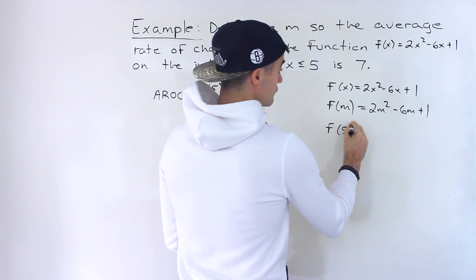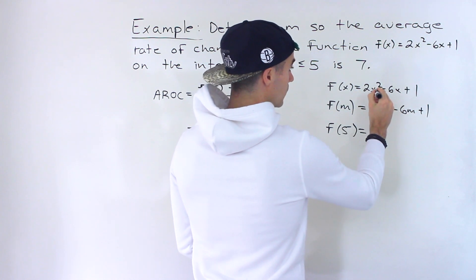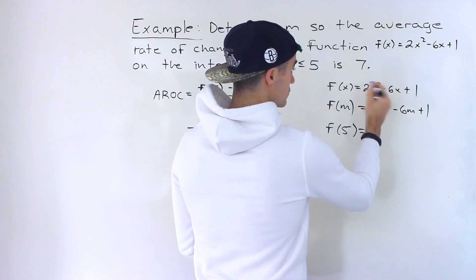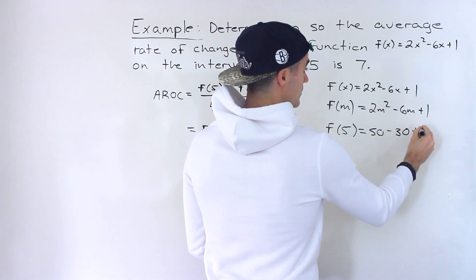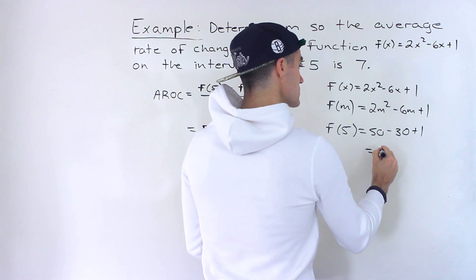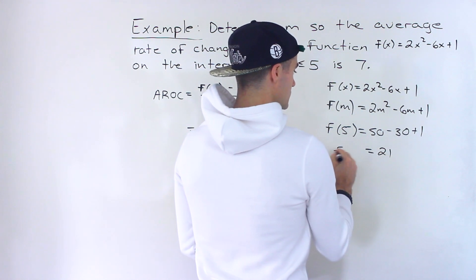And then also notice we're going to have to plug in f(5). So f(5) would be what? 5 to the power of 2, which is 25 times 2 is 50, minus 6 times 5, which is 30, plus 1, which gives us 21. That's what f(5) is.